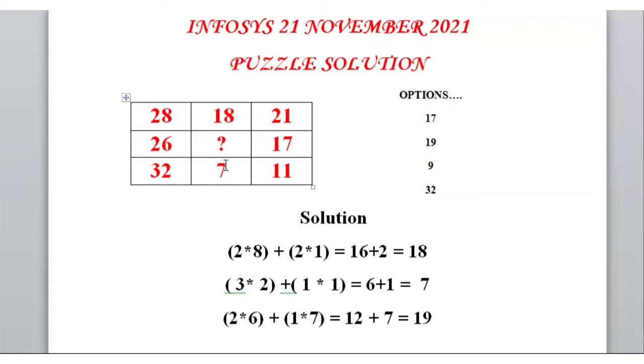If we multiply 2 with 6, we get 12, plus 1 multiply by 7 equals 7. Then we get the output 19. Here friends, option B is correct, meaning 19 is the correct answer.